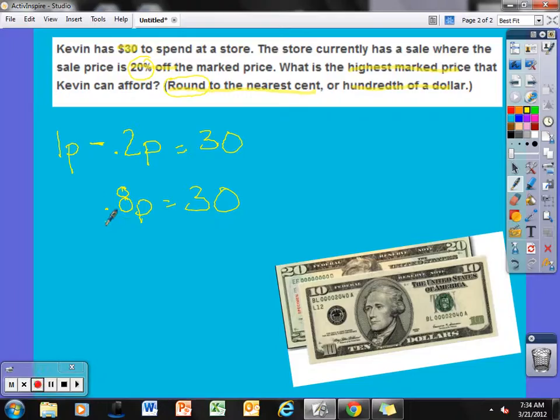So just like we did last time, we want to evaluate for 1P, not eight-tenths of a P. So I'm going to divide both sides by eight-tenths. If I put it in my calculator, 30 divided by eight-tenths, I get that.